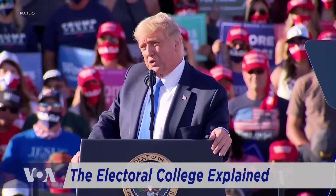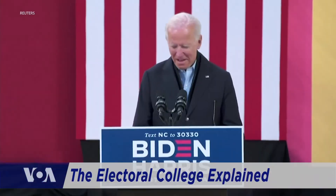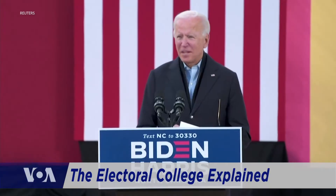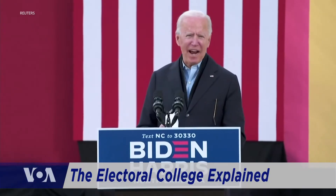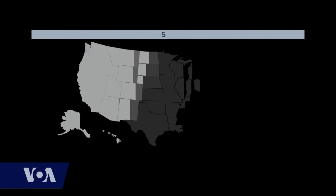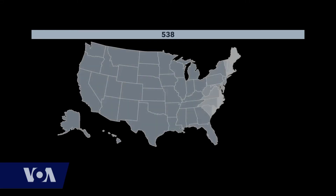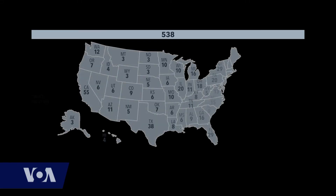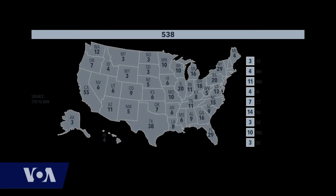From afar, a U.S. election probably looks like a nationwide referendum on a couple of candidates. But actually, it's an aggregation of elections held in each of the 50 states. The more populous the state, the more votes it has in what is called the Electoral College.